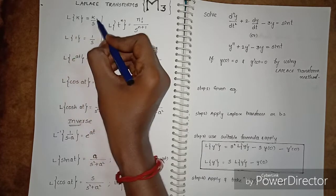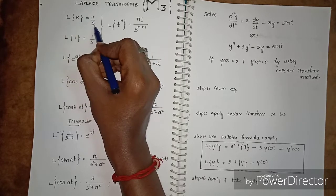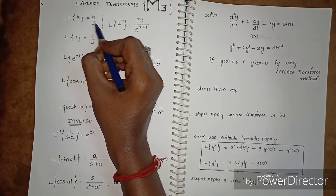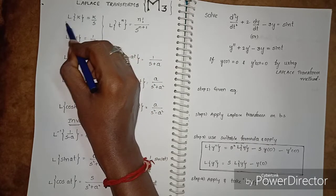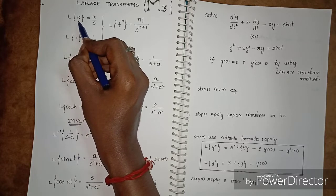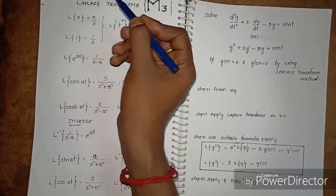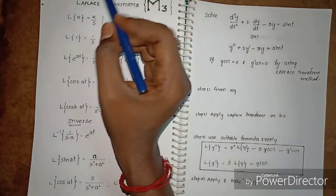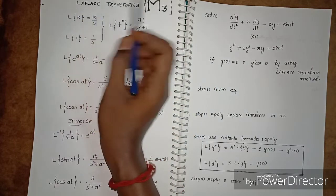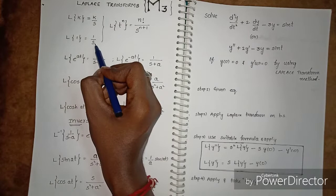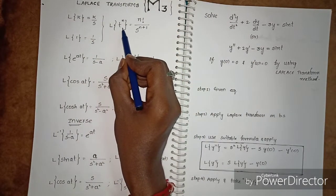L of k is equal to k by s. Laplace is a function of s. L of k equals k by s — this is for a constant. L of 1 is 1 by s, L of 2 is 2 by s, L of 3 is 3 by s. Simple — for any constant, multiply it out. L of 1 is 1 by s.